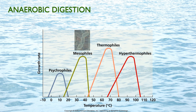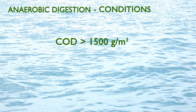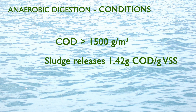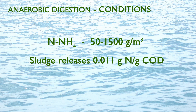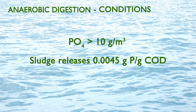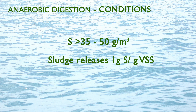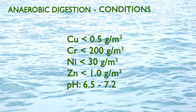For anaerobic sludge digestion to occur, a minimal COD concentration of 1500 g/m³ is required. Ammoniacal nitrogen concentration should be above 50 g/m³ but below 1500 g/m³ to avoid inhibition of methanogenesis. Phosphorus content should be higher than 10 g/m³. Sulfur should be kept between 35 to 50 g/m³ to maintain bacterial growth and methanogenesis. Some heavy metals should be kept below a limit as shown, and pH should be kept as neutral as possible.